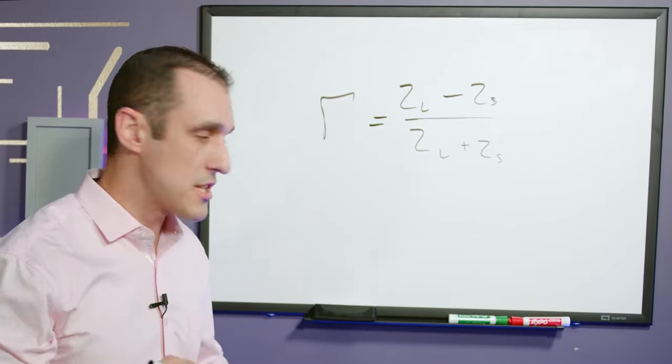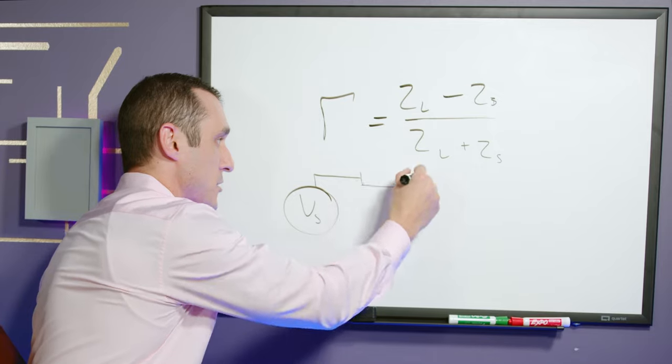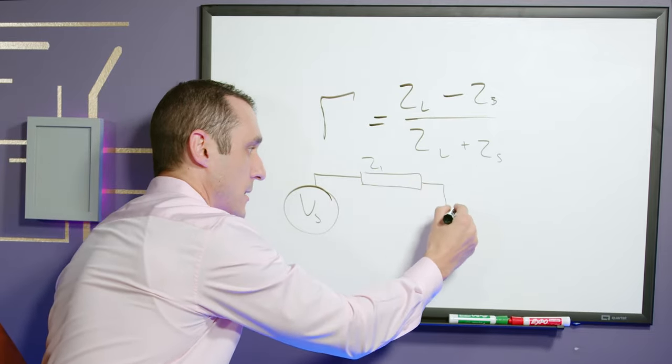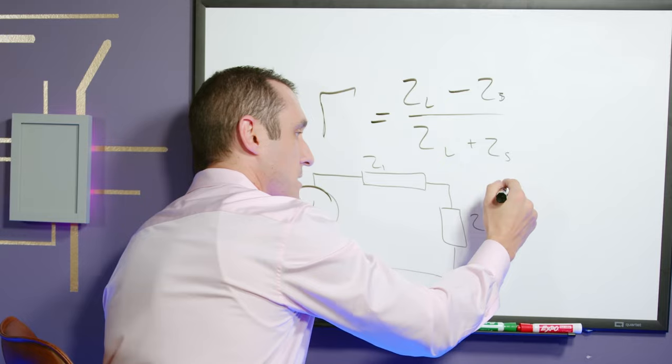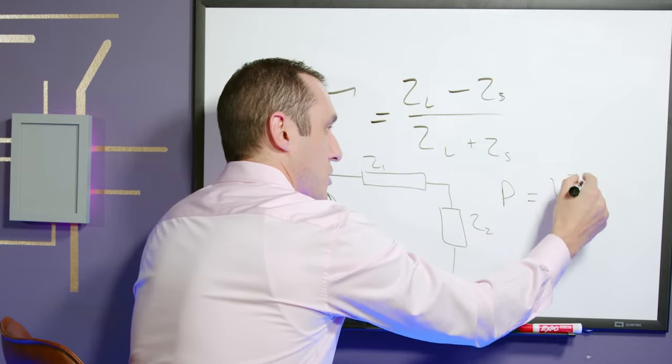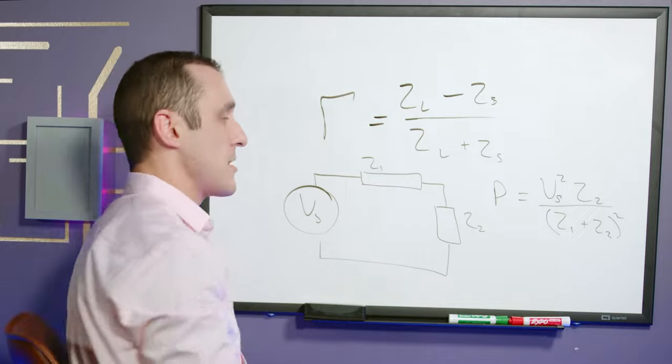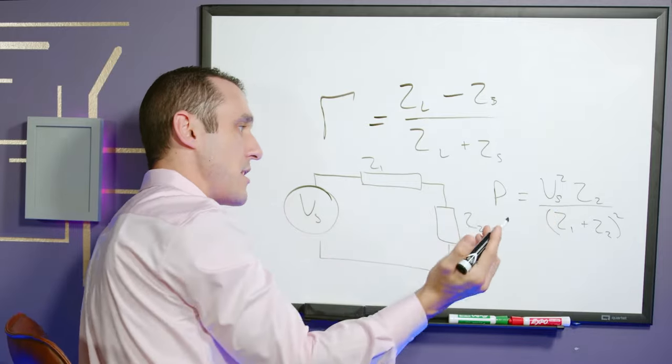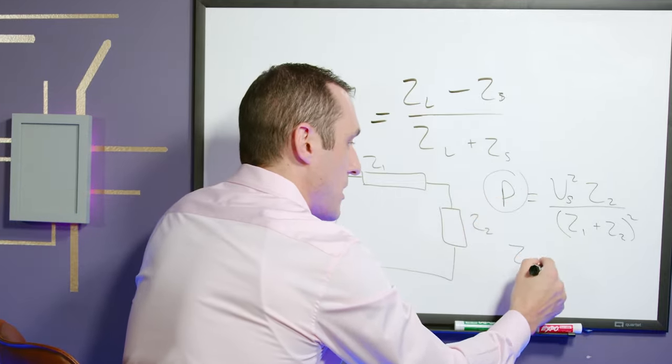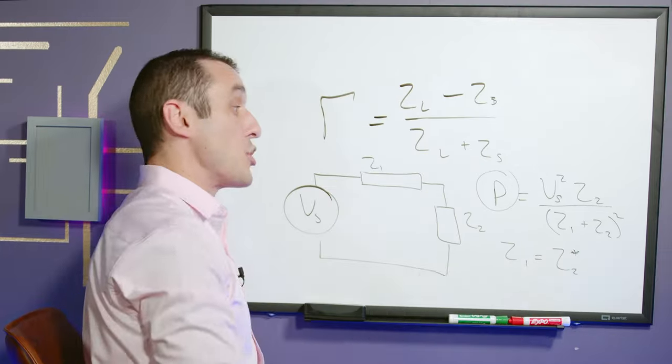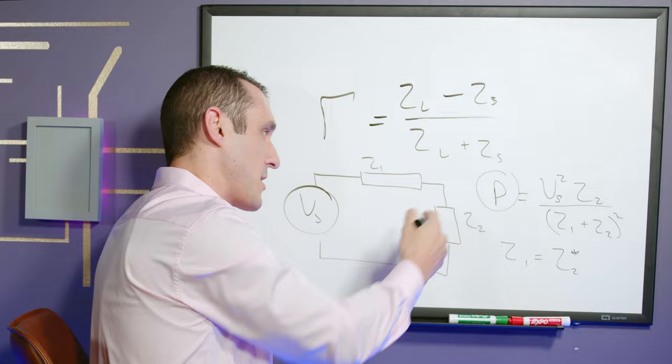The maximum power transfer theorem is pretty simple. It states that if we have a circuit with a source voltage connected to two impedances, we'll call this Z1 and Z2. The power delivered to Z2 is the source voltage squared multiplied by Z2 divided by Z1 plus Z2 squared. And of course you can then maximize this when Z1 is equal to the conjugate of Z2. So if the two impedances are complex conjugates of each other, the reactive portions cancel out and this maximizes the power delivered to Z2.